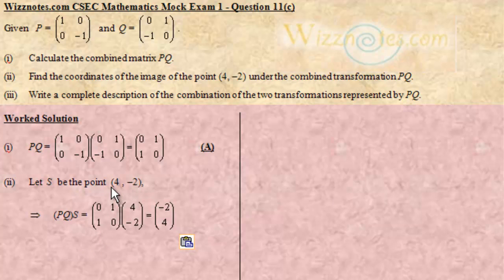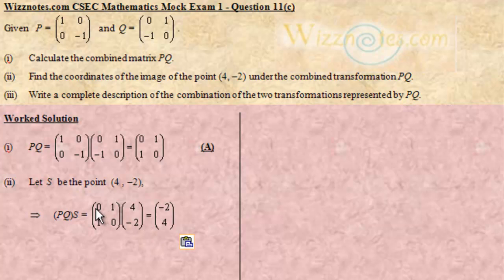Now let's call that point S = (4, -2). Under PQ, what we do to apply the matrix PQ to S is multiply PQ times S — the matrix PQ multiplied by the column matrix for S. This is a 2×2 multiplied by a 2×1, so the result is going to be a 2×1 matrix.